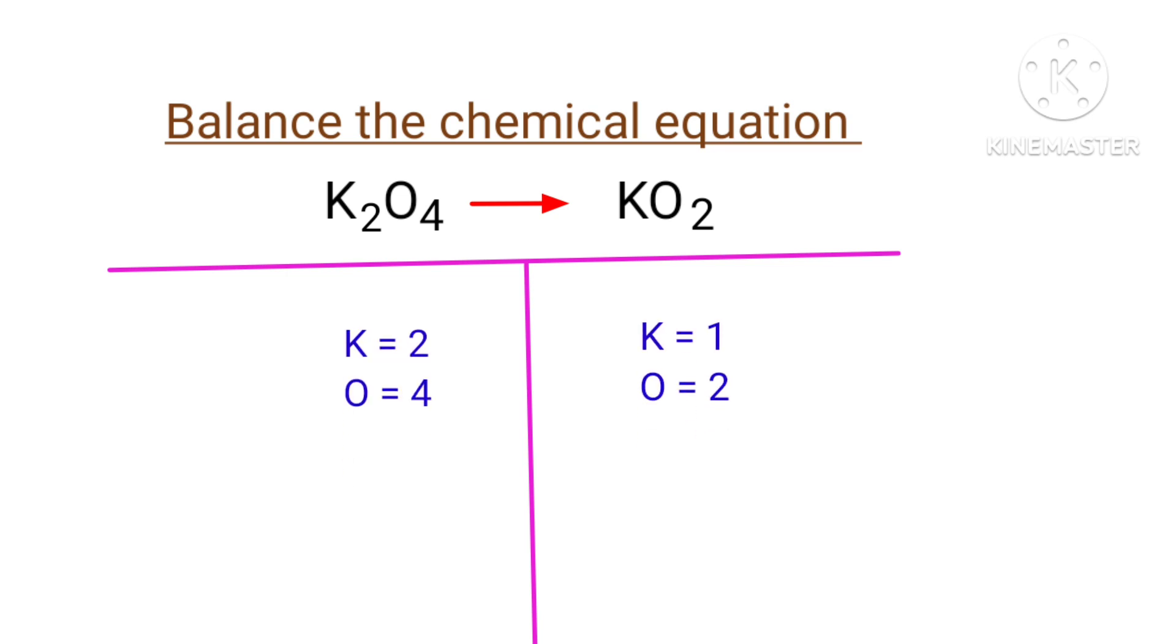In this equation, the left hand side I have two potassium atoms and four oxygen atoms, and the right hand side I have one potassium atom and two oxygen atoms.